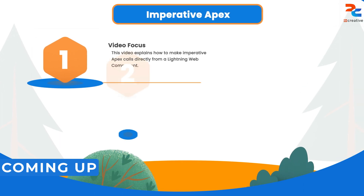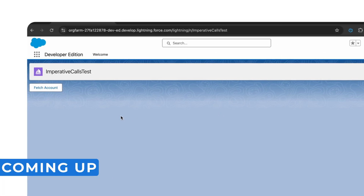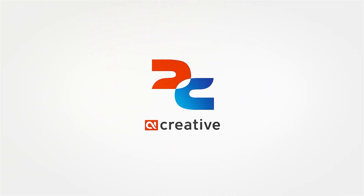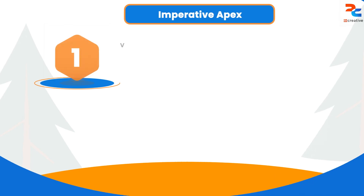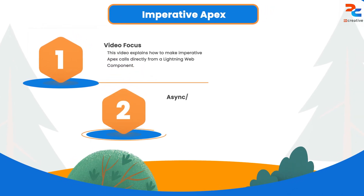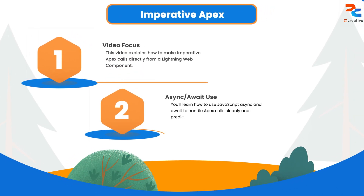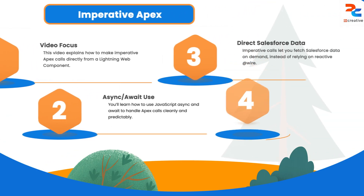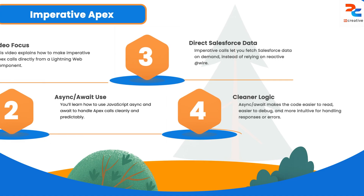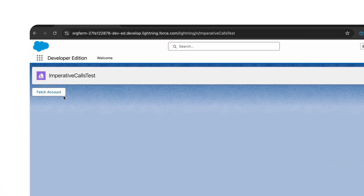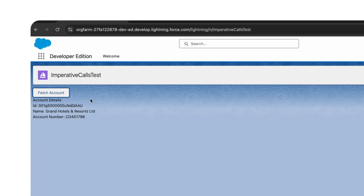In this video we'll explore how to make imperative apex calls from a Lightning Web Component using JavaScript async and await syntax. This method helps you fetch data from Salesforce in a clean and easy to understand way. We'll look at a simple example where we fetch an account record by its ID when you click a button.